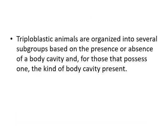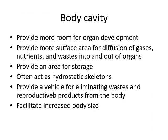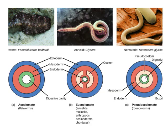Triploblastic animals are organized into several subgroups based on the presence or absence of a body cavity. A body cavity provides more space for organ development, provides an area for diffusion of gases, nutrients, and waste, provides storage such as fat in the abdominal cavity, serves as a hydrostatic skeleton in some organisms, and facilitates transport of waste and reproductive products, as well as increased body size.